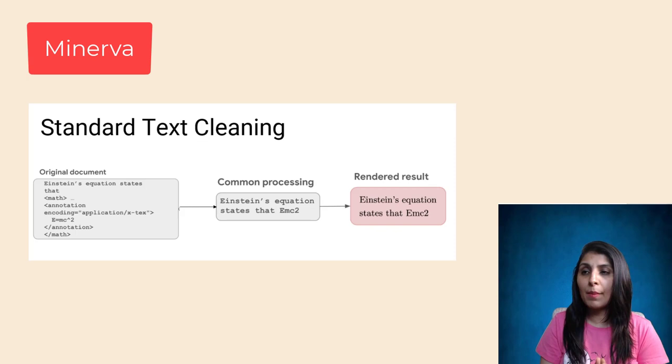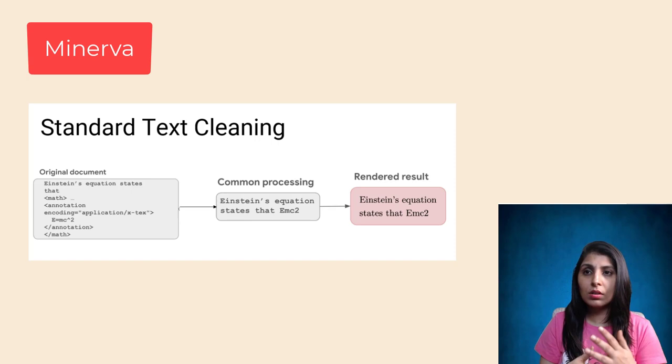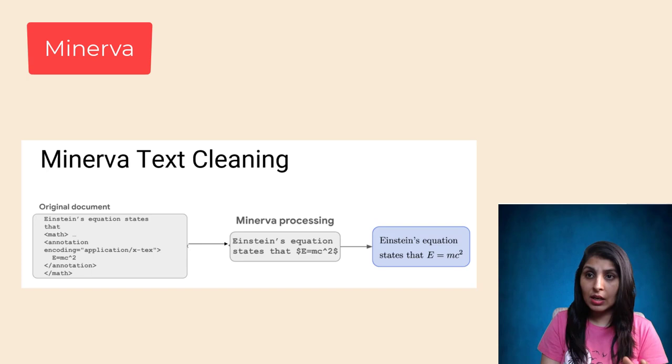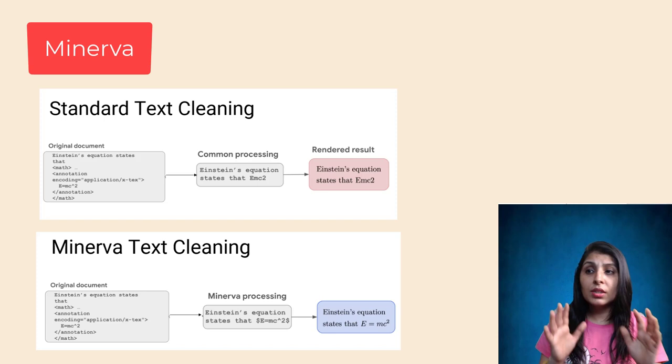Let me show you with an example. By standard text cleaning, Einstein's equation looks like this. But with the text cleaning done for Minerva's dataset, the Einstein formula looks like this. This careful data processing preserves mathematical information, which allows the model to learn mathematics at a higher level.